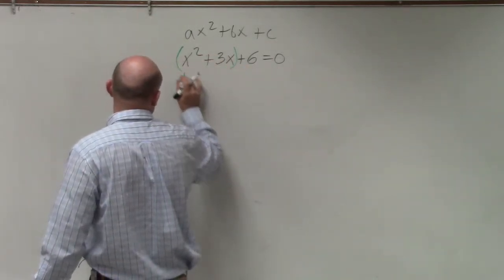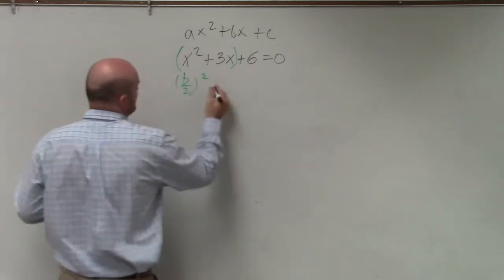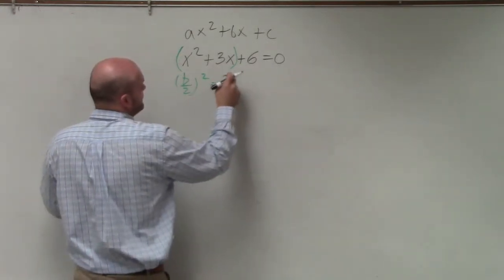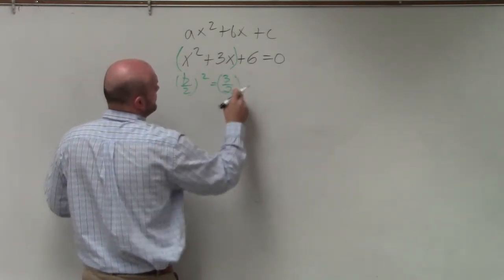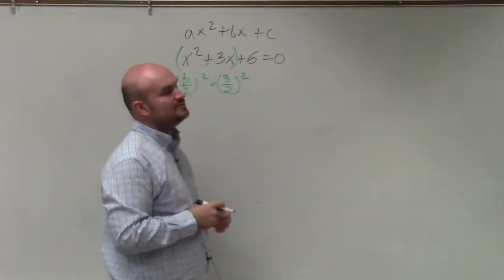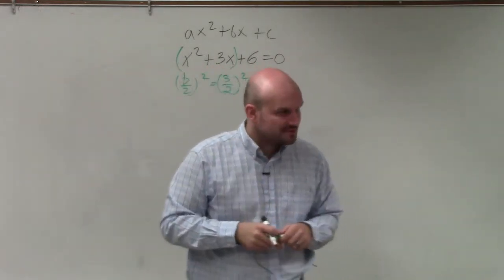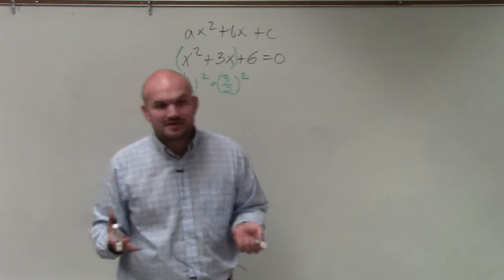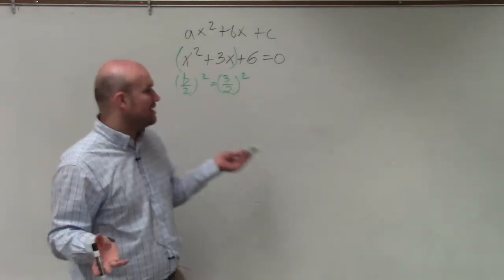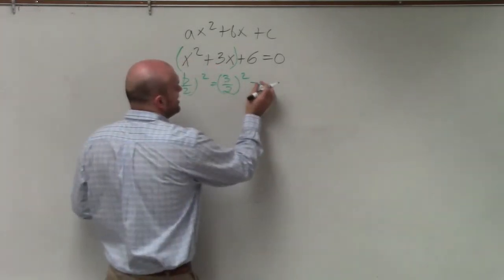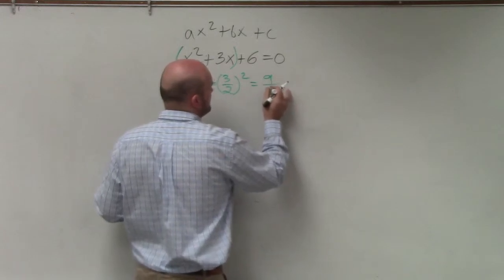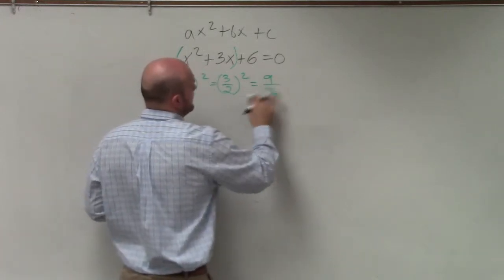Next step, step three, is take b divided by 2 and square it, which, in this case, is going to be 3 divided by 2 and square it. Please, guys, do not convert to decimals. I know a lot of you guys hate fractions, so you just refuse to use them and you'd rather use decimals. But please keep them as fractions, 9 over 4.